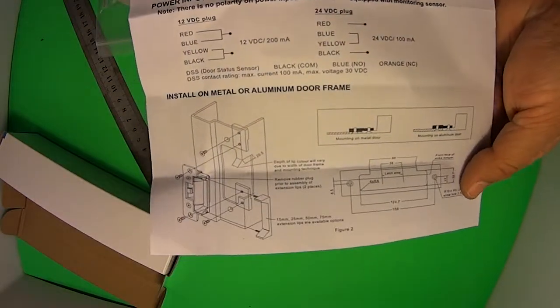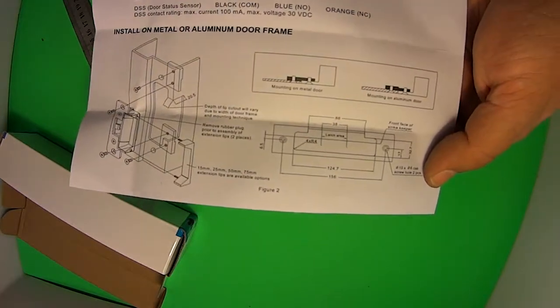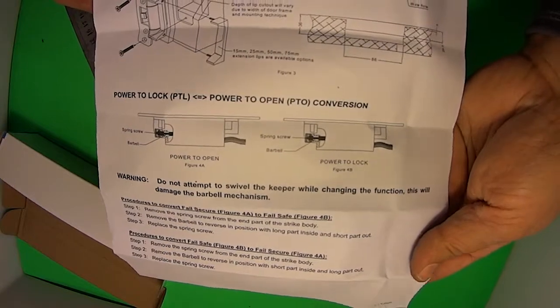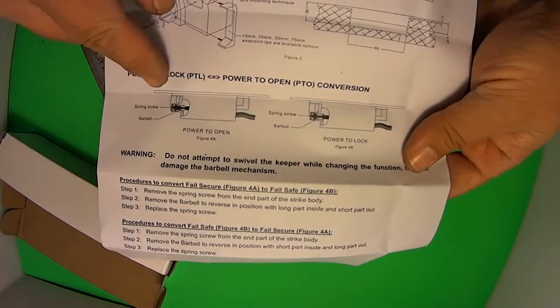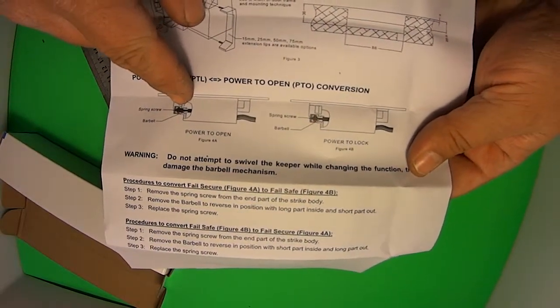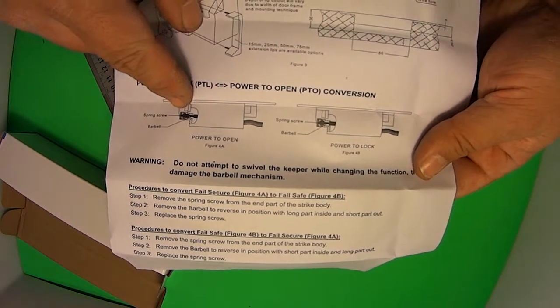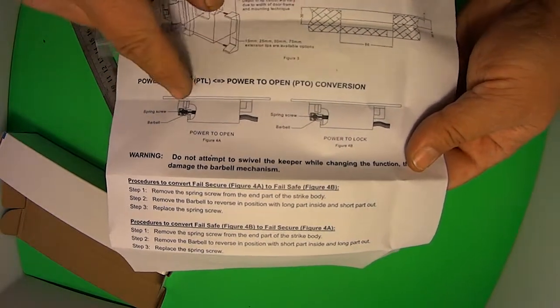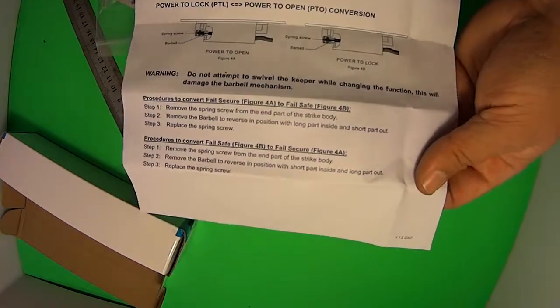That will take you through all the standard instructions. Okay, this is the power to lock bit. It's telling you which way to put the small pin inside. You would remove it. Be very careful when removing it, not to drop the springs or the part. Flip it around, put it back together and that's how you do it.